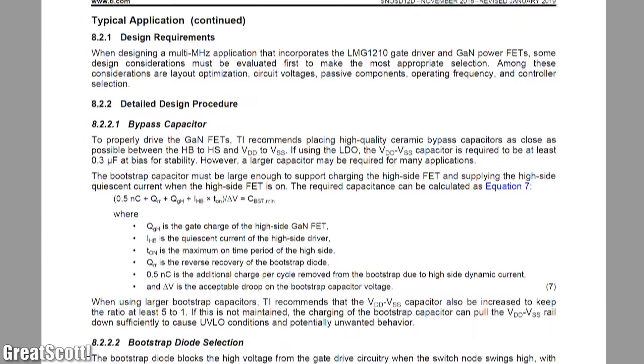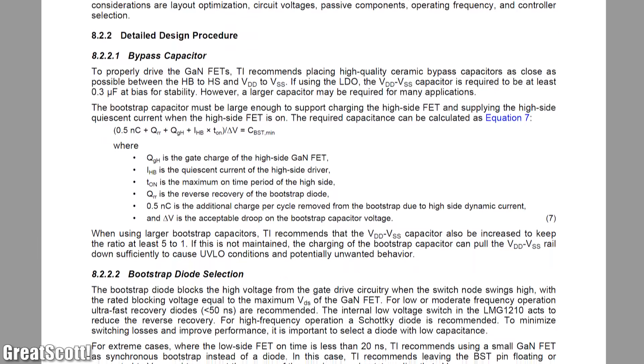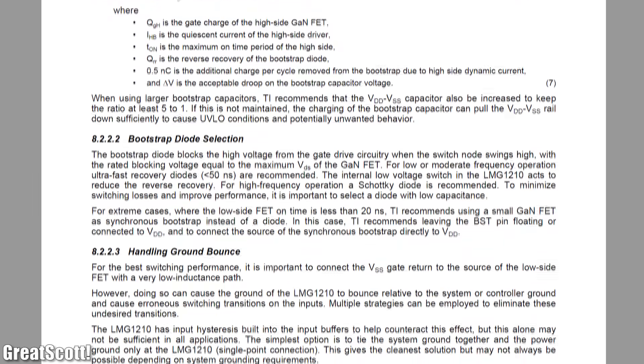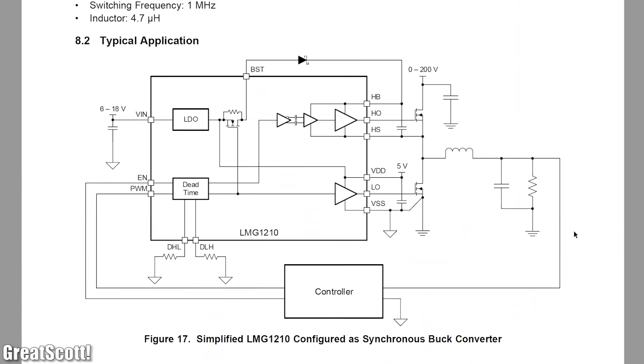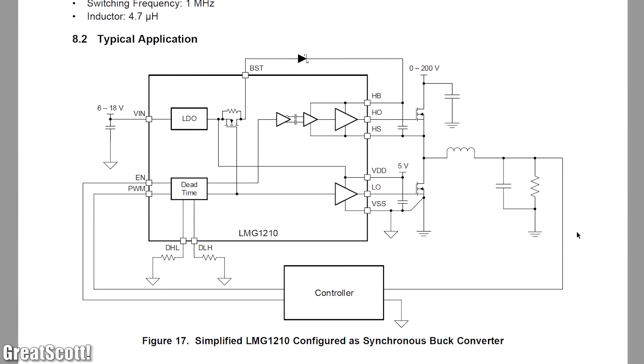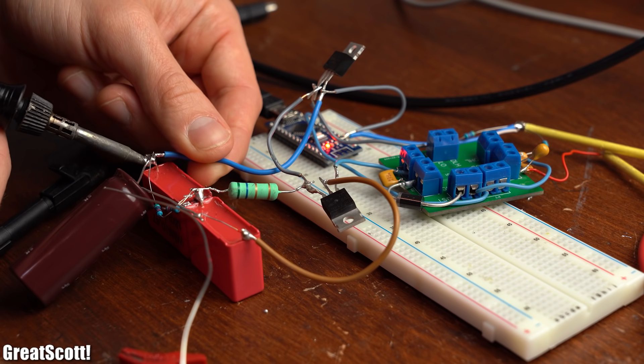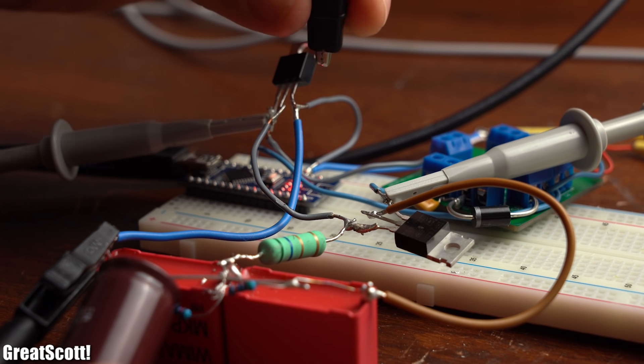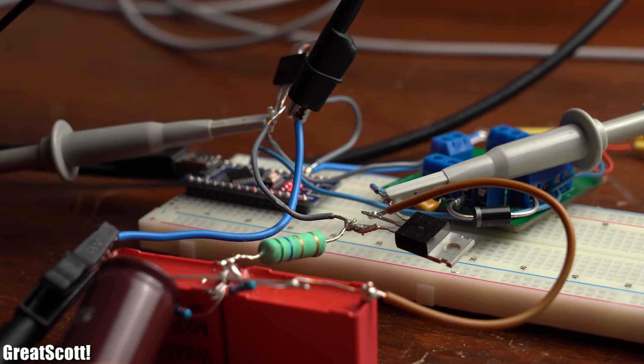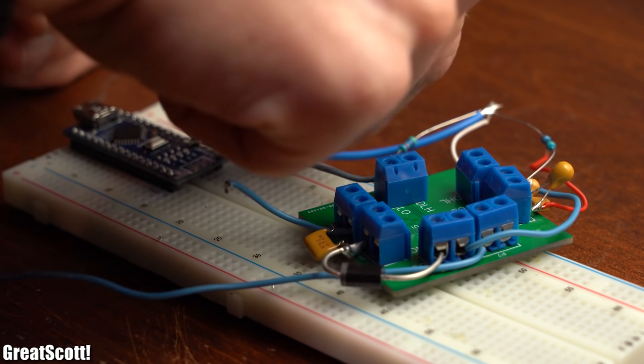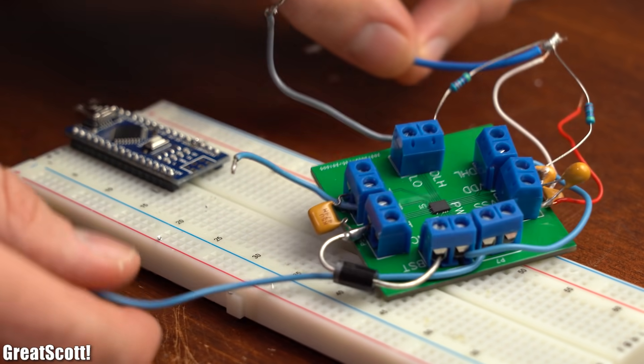So next I looked through the datasheet of my MOSFET driver IC to not only choose a suitable bootstrapping diode and capacitor but also to find a typical schematic for such a bootstrapping application. And as soon as I built up my own bootstrapping circuit with the IC I could use my oscilloscope in order to find out that everything works just like I planned it. And with that being said you already know quite a lot about driving MOSFETs.